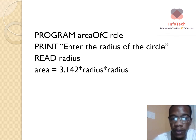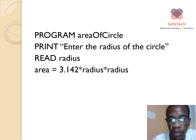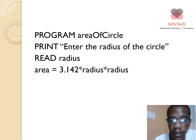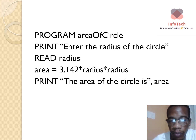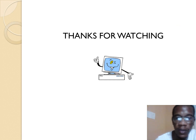In the algorithm we write: area equal to 3.142 — which represents pi — times radius times radius. We cannot write r-squared or radius-squared in a program, so we multiply radius by itself two times. Finally, we print: 'The area of the circle is' followed by whatever value is stored in the variable area.